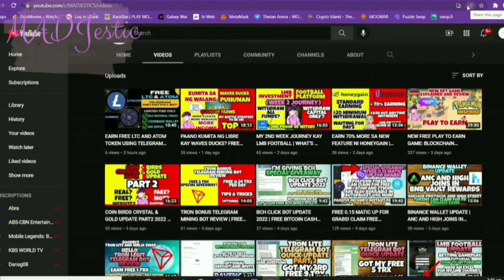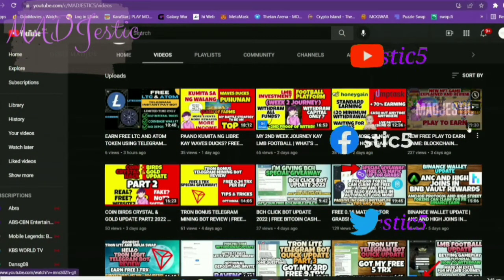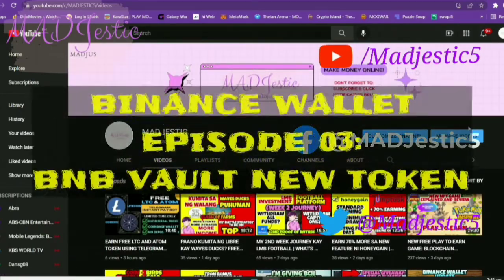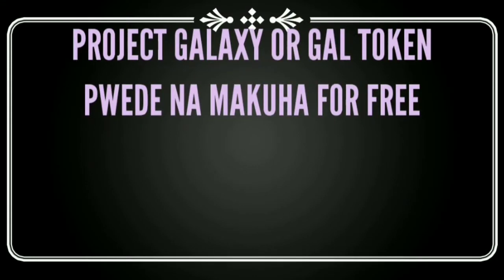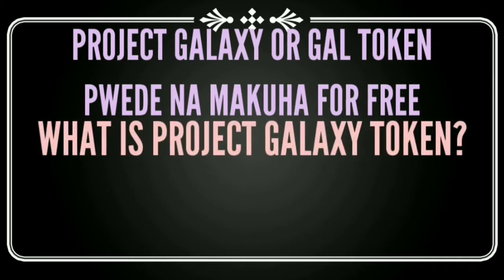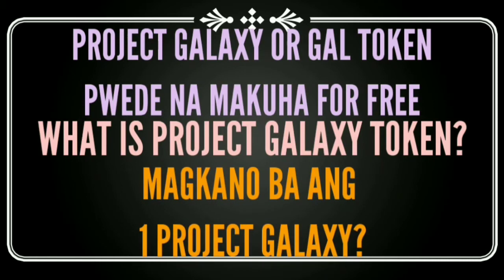Hello everyone, welcome back to my YouTube channel, this is Madge. For today's video, let's talk about the new launch token in Binance Wallet, which is Project Galaxy or GAL token. You can get it for free in the launch pool rewards of BNB Vault, and we will also check the APY of it. We are going to talk about what Galaxy token is and what the value of GAL token is right now.